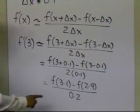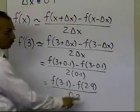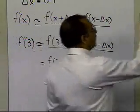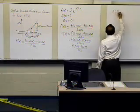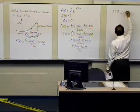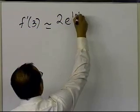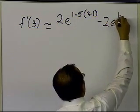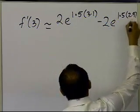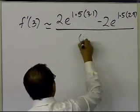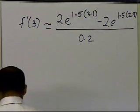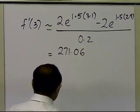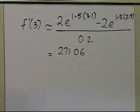So let's substitute x = 3.1 and x = 2.9 into the function to get the approximate value of the derivative. So f'(3) ≈ [2e^(1.5 × 3.1) − 2e^(1.5 × 2.9)] / 0.2, and this value turns out to be 271.06.